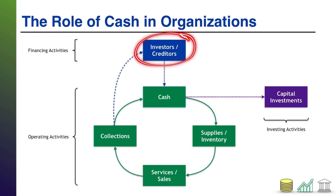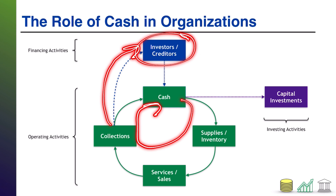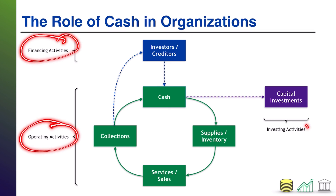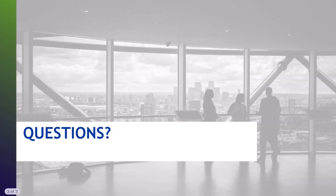So remember: you start off your business by getting cash. The cash runs your whole operating cycle. At some point, you give some cash back to the parties that financed you, and at some point, you use cash to grow your business. While accrual accounting does focus on revenues and expenses and ultimately profit, at the end of the day, cash is still the item that keeps the business running through all types of activities that the business engages in. That's it for the role of cash in organizations — hope you found this helpful, and I hope you join me for another video.